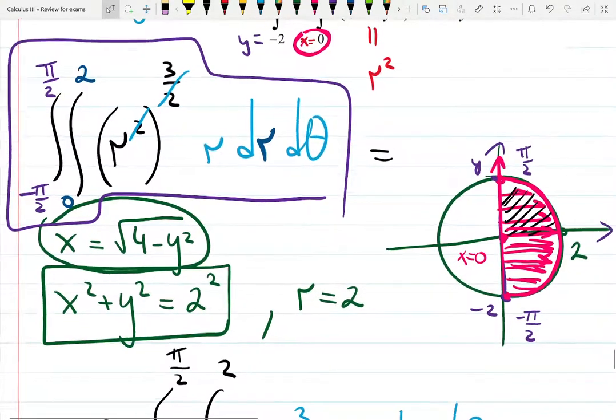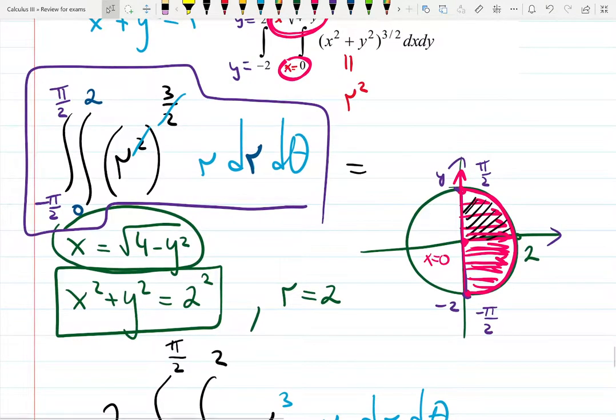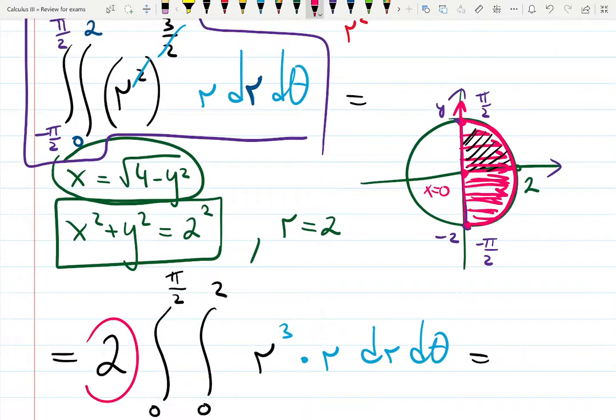Thus, we figure out this idea from this picture. You see that angle is running from minus pi over 2 to pi over 2, or from 0 to pi over 2. And then you just double the result. That's what I did here due to symmetry.